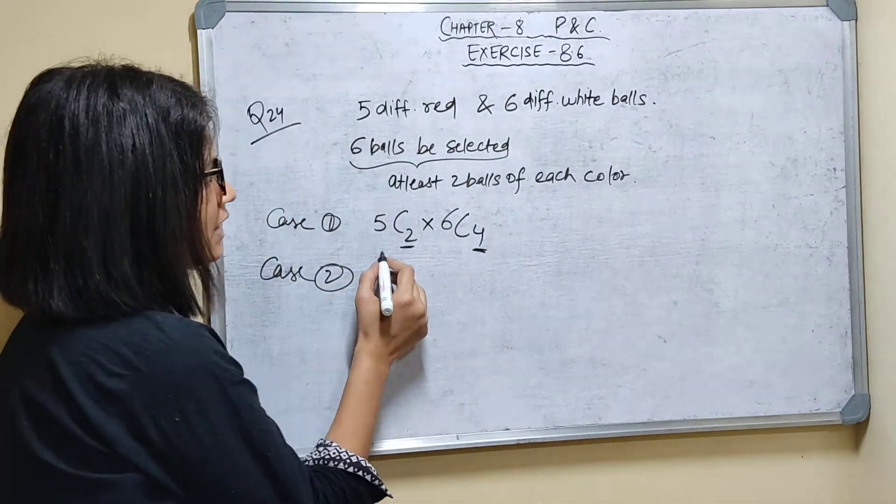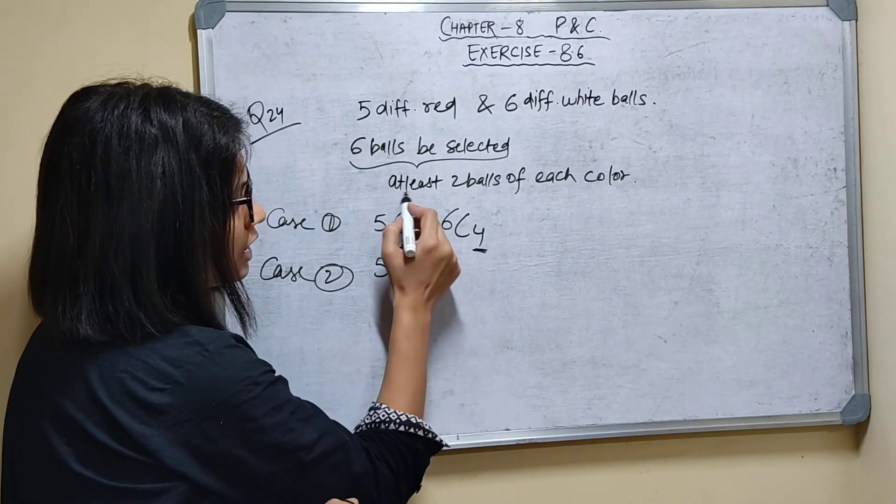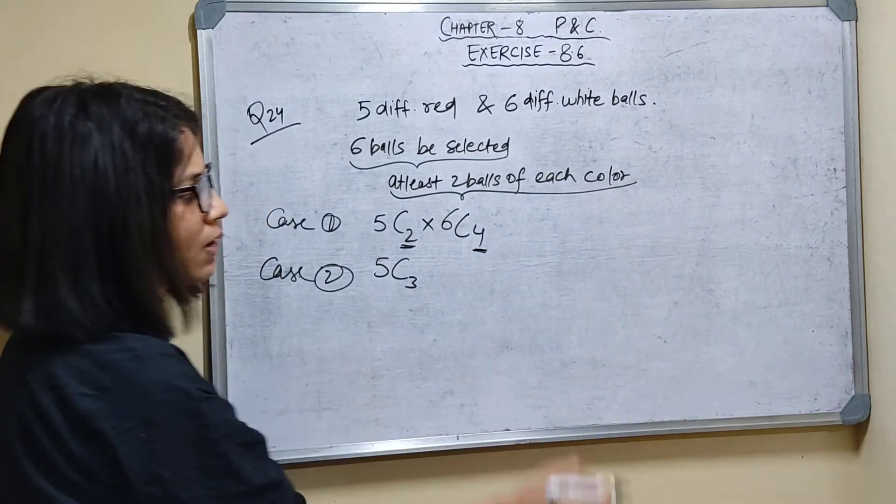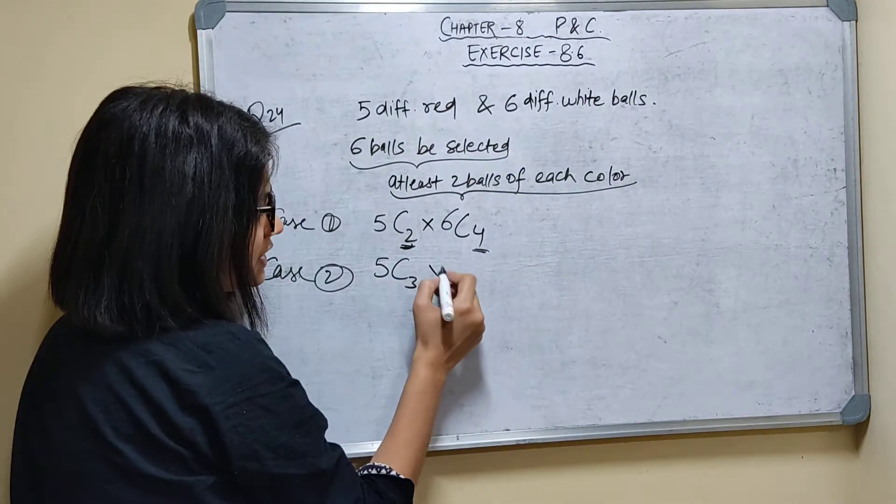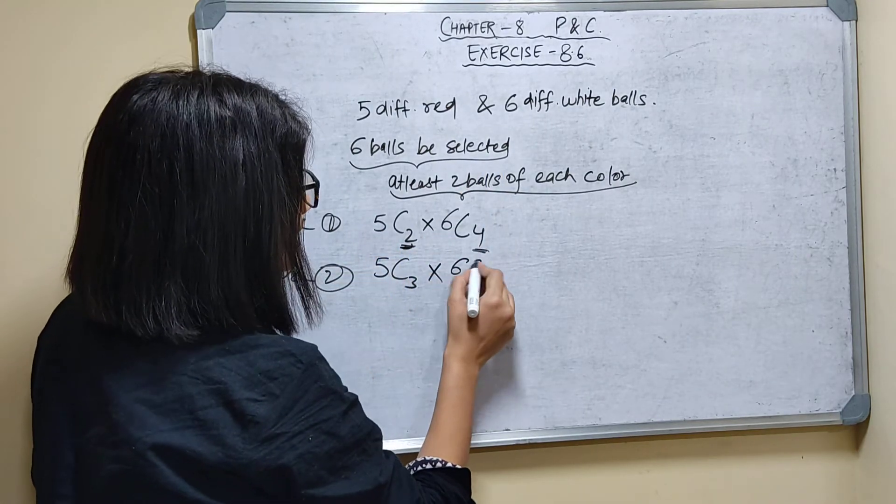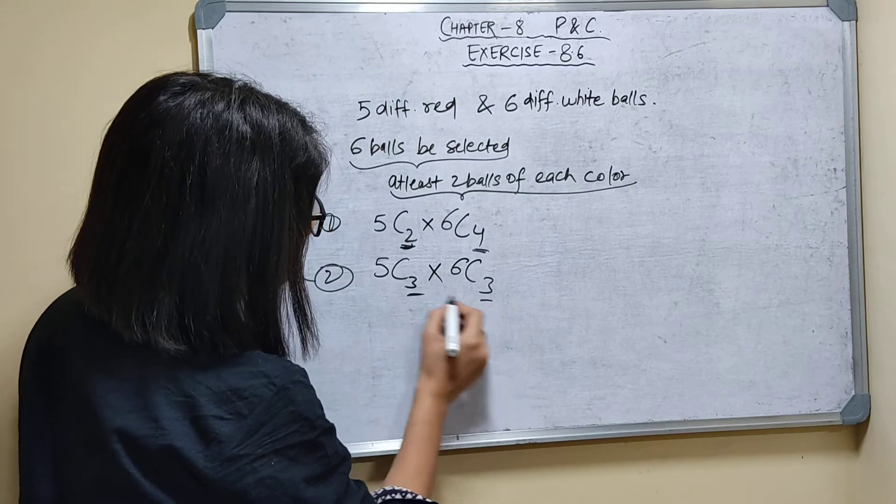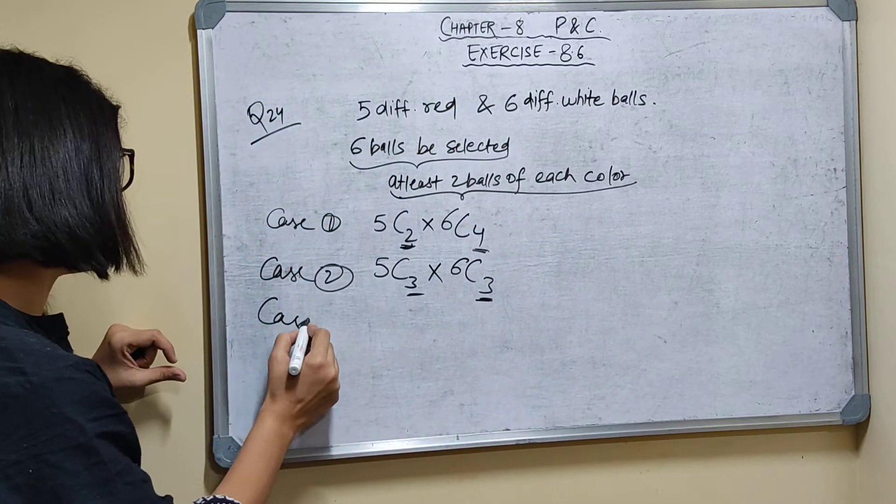Case 2: What if I'm taking 3 balls from red? The condition of at least 2 balls of each color is satisfied. 5C3 - if I'm taking 3 balls from red, then I can take 3 from white balls. The same condition of at least 2 balls of each color is satisfied.